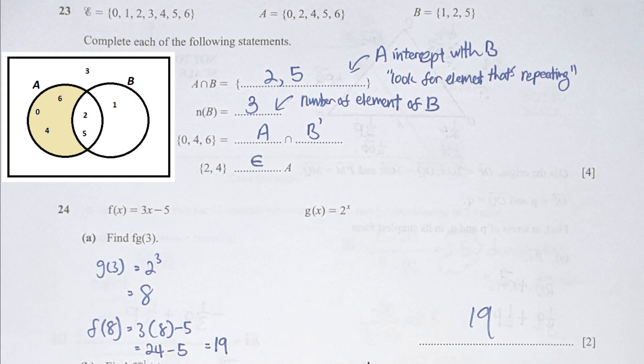Question 23. A intersect with B. So the elements that I'm repeating here is 2 and 5. For the next part, they are referring to numbers of elements in B. So there's 3 numbers there. Hence, I wrote A3 over there. For the section which cover the elements 0, 4 and 6. This one will be A intersect with everything other than B. And the last part, 2 and 4 is actually an element of A.